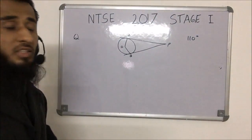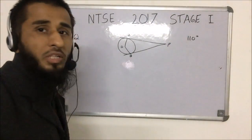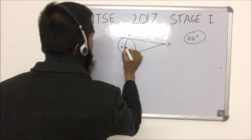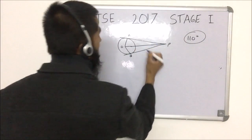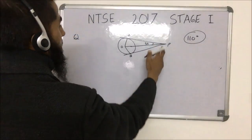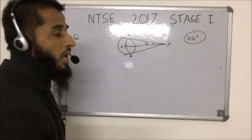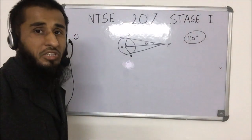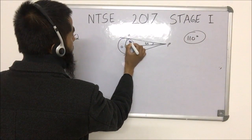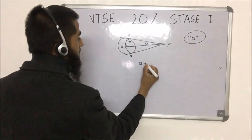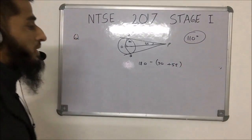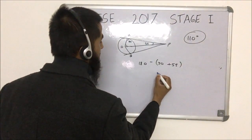This question involves the properties of tangents. PA and PB are two tangents to the circle and the angle between them is 110°. The angle between the line joining P and the center is half of 110°, which is 55°. Since the tangent is perpendicular to the radius, that angle is 90°. So angle POA = 180° − 90° − 55° = 35°.